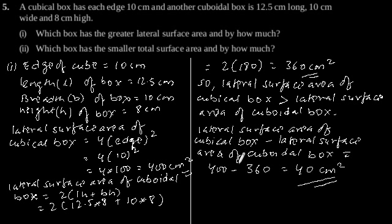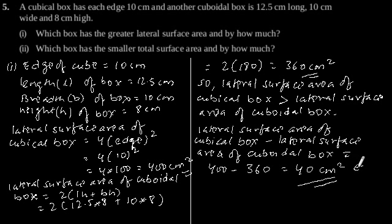Therefore, we can say that the lateral surface area of the cubical box is greater than the lateral surface area of the cuboidal box by 40 cm squared.